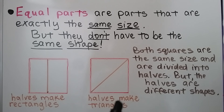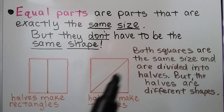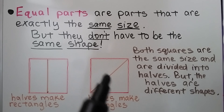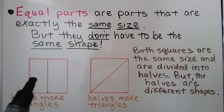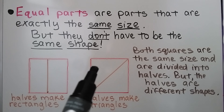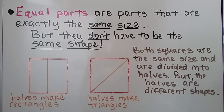For this square, it's the same size as this one, but we cut it on a diagonal, and these halves make triangles. Both squares have halves, and this rectangle is the same space as this triangle. They're both halves of the same size square. Let's talk about this some more.